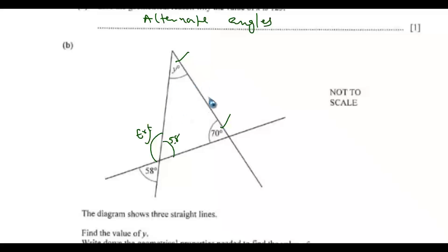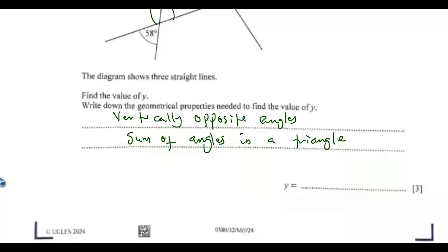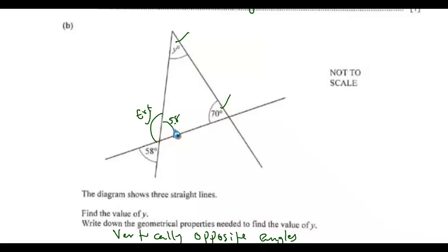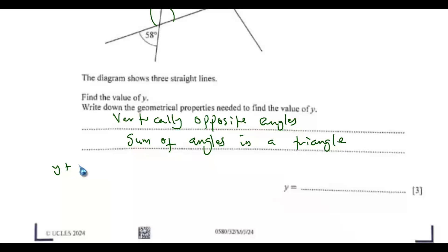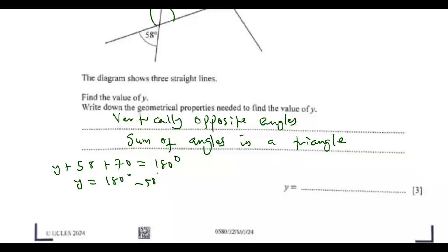We can say the sum of these three angles: y plus 58 plus 70 equals 180 degrees. So y equals 180 minus 58 minus 70. If you input this into your calculator, you should get the value of y to be equal to 52 degrees.